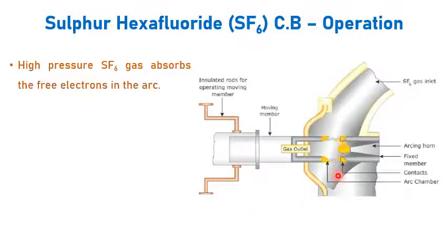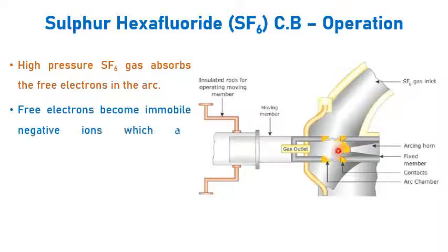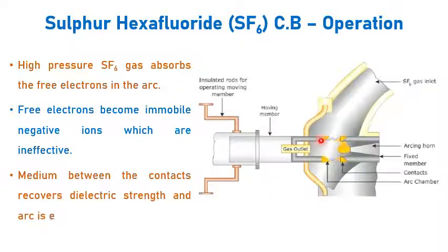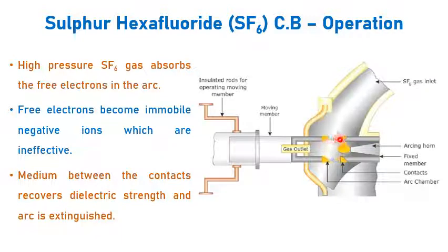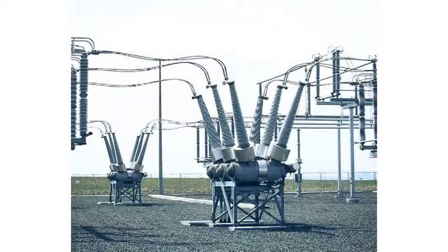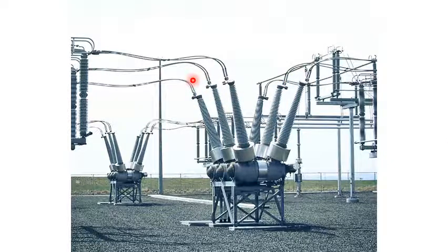This high-pressure SF6 gas absorbs the free electrons present in the arc. The free electrons become immobile negative ions, meaning they cannot move freely, so current cannot flow through the gap between the contacts. The medium between the contacts recovers its dielectric strength at a faster rate — deionization happens and the arc cannot re-strike further. This is how an SF6 circuit breaker in a substation looks, with incoming lines, outgoing lines, and the arc quenching chamber.